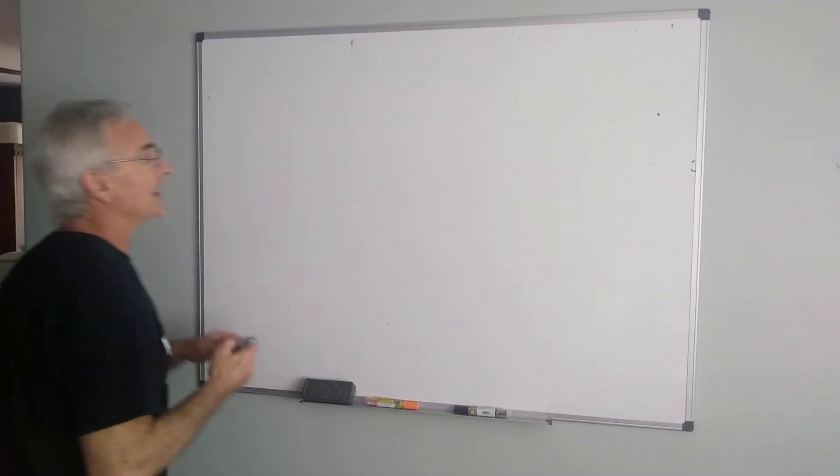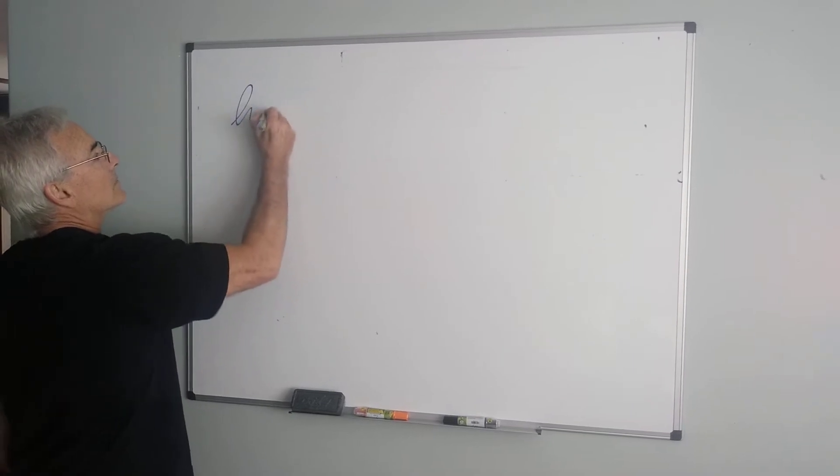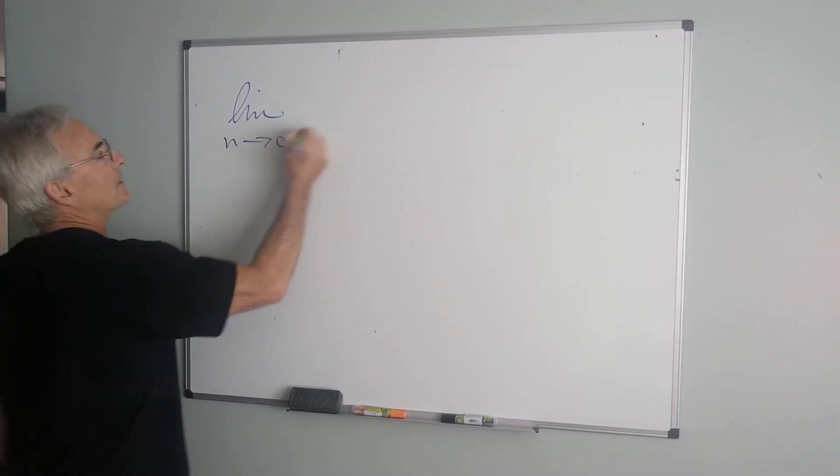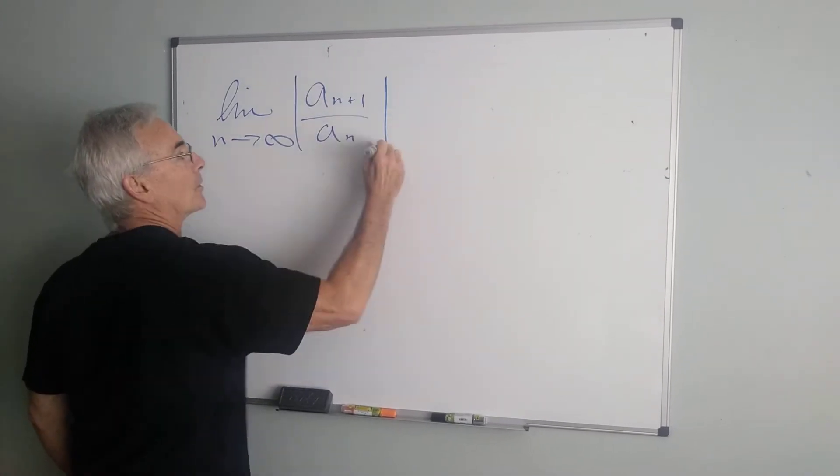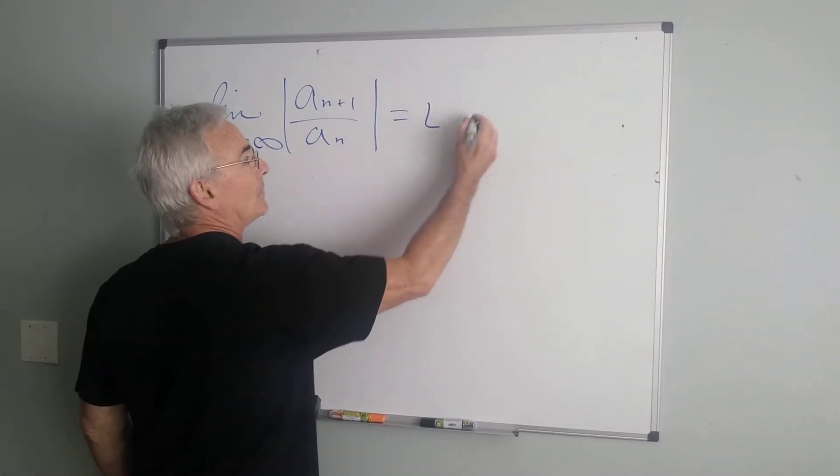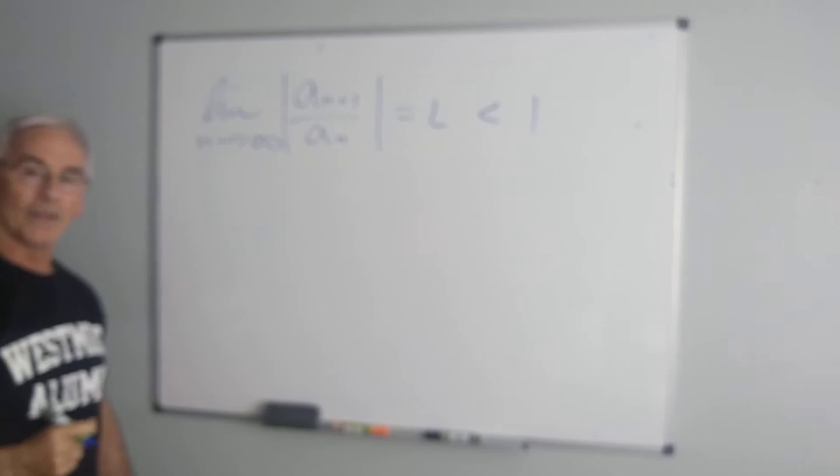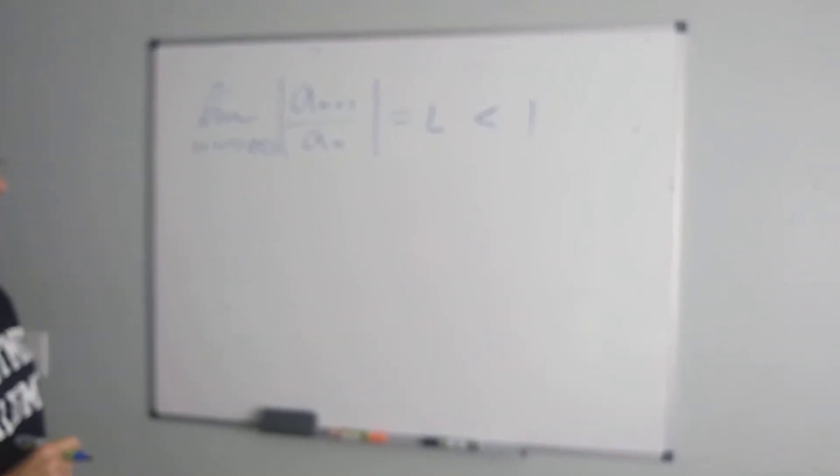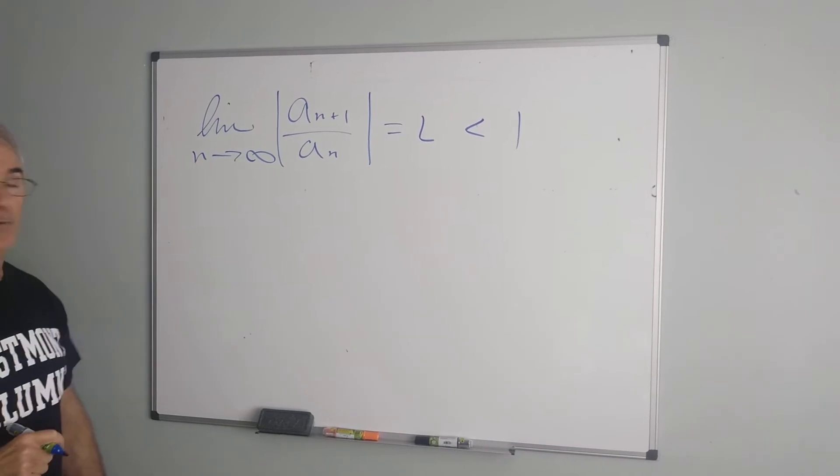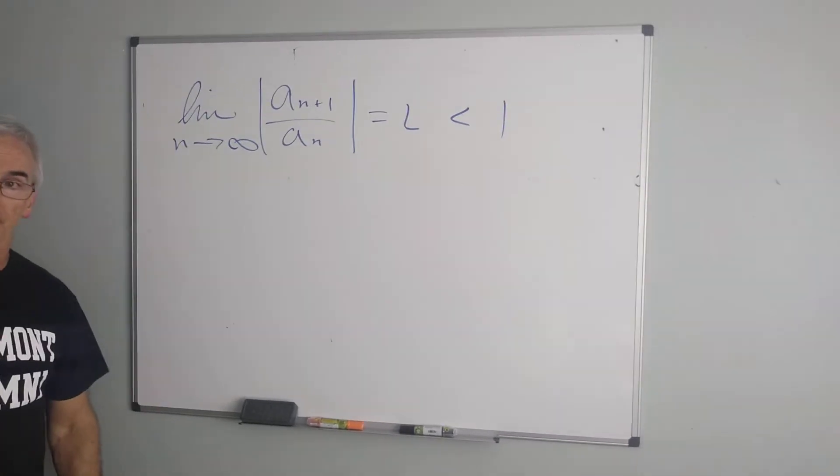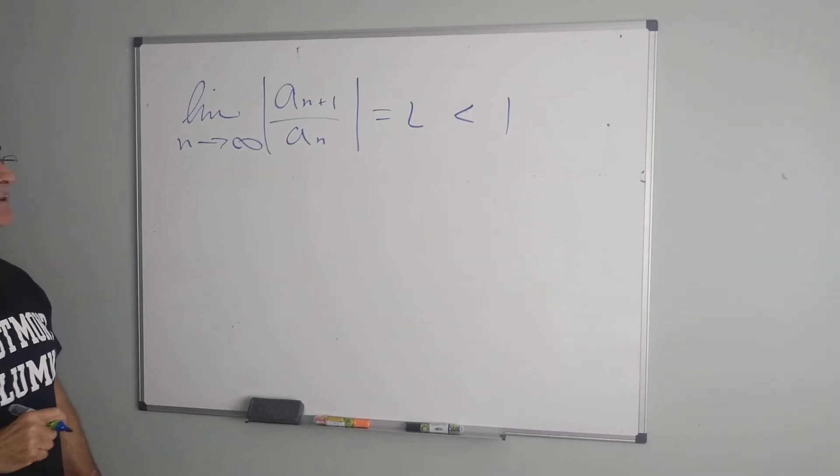If that's the case, then if the limit of this ratio of consecutive terms, which we'll call L, if that is less than 1, then this is acting like a geometric series and the L is acting like an R, and our series will converge. It won't converge to the same value the geometric series did, but it will, in fact, converge.